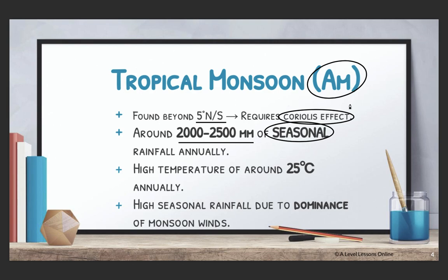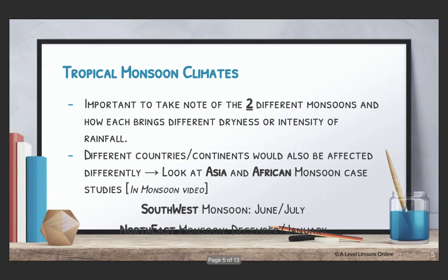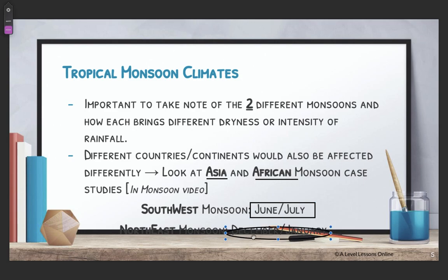The seasonal rainfall of the AM climate is largely because of the dominance of monsoon winds. For the AM climate, you need to take note of two different monsoons — the Asian and the African monsoon. The southwest monsoon occurs in the June-July period while the northeast monsoon occurs in December and January.